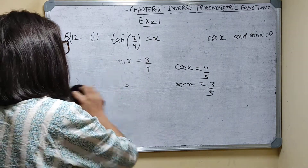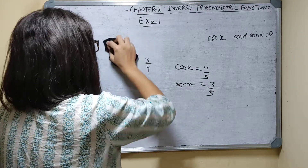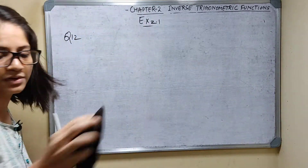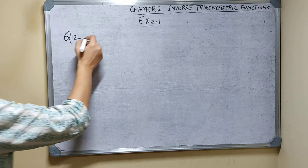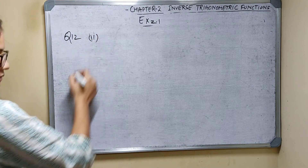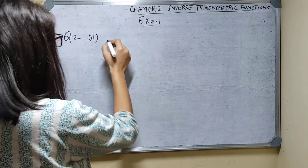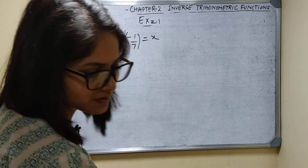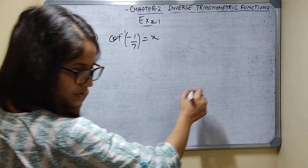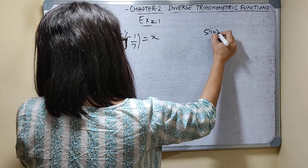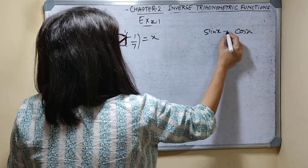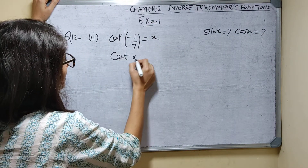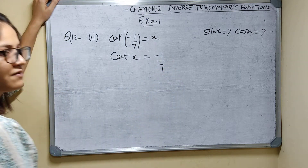Question number 12, second part. You can see: cot inverse of minus 1 by 7 is equal to x. So cot x is equal to minus 1 by 7.